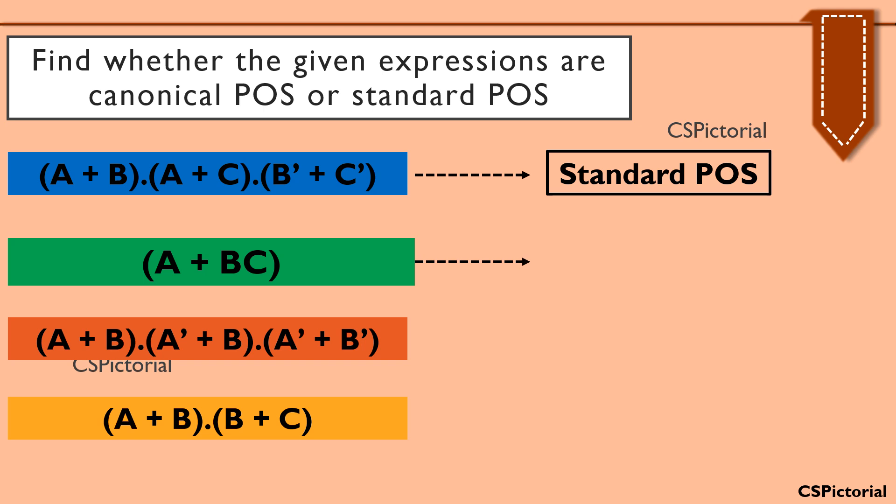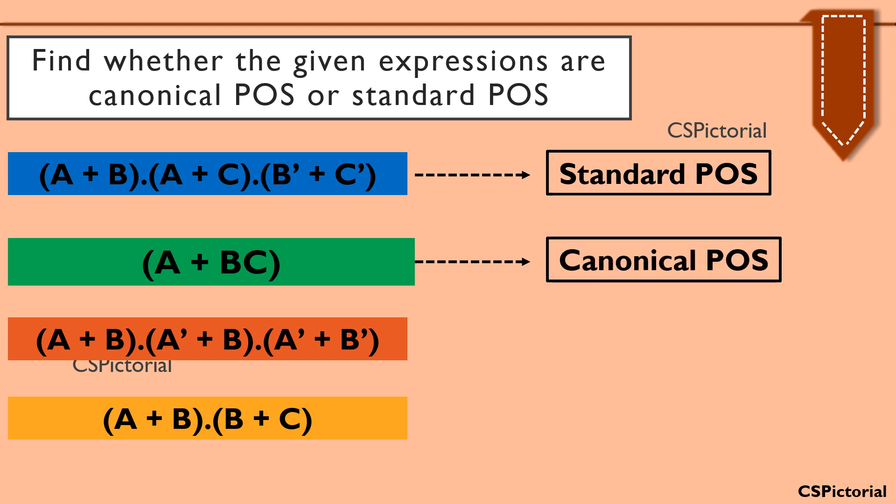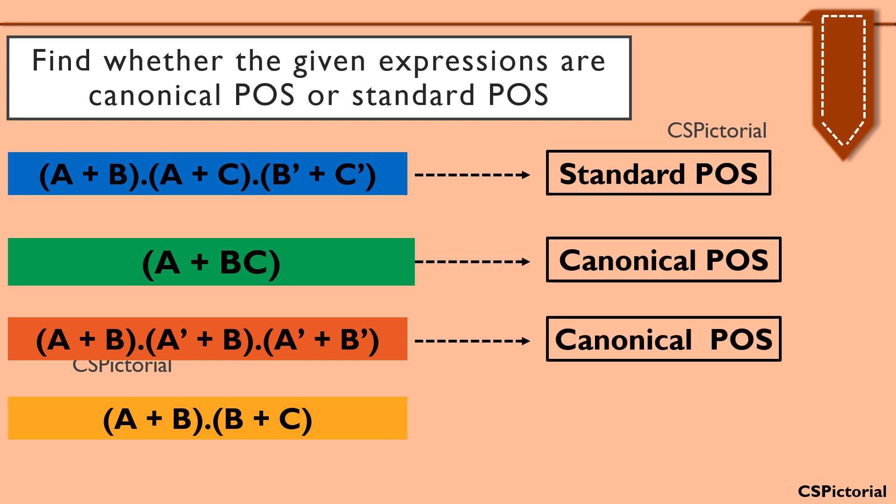In the second example, there is only one sum term a plus bc, and this sum term includes all three literals a, b, and c. Thereby it is a canonical POS. Similarly, in the next example (a plus b) into (a bar plus b) into (a bar plus b bar), each sum term includes all two literals a and b. So it is a canonical POS expression.